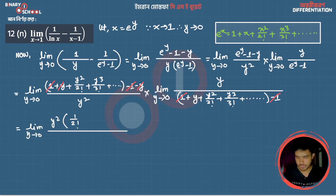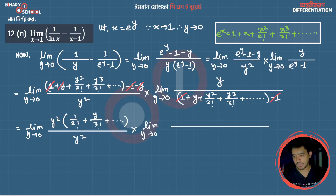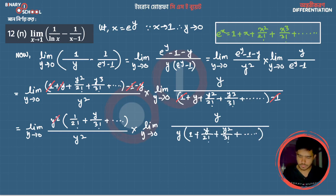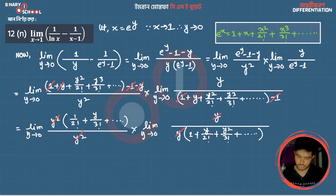After substituting the series, the numerator becomes terms that cancel, leaving y squared by 2 factorial plus higher order terms, all divided by y squared. As y tends to 0, the higher order terms vanish, and we are left with 1 by 2 factorial, which equals one half.